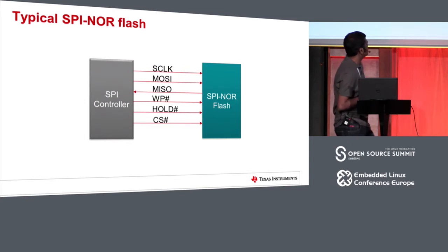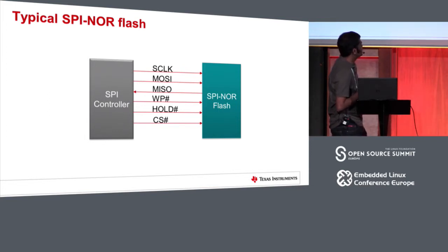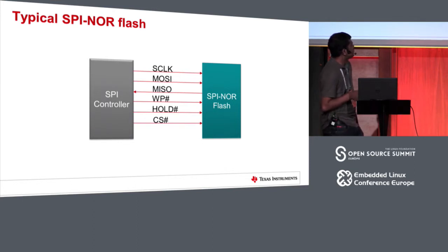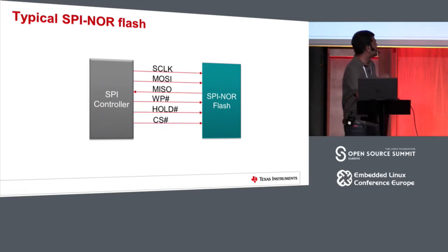This diagram shows a typical SPI NOR flash connected to a SPI controller. The top three signals are common SPI signals — there is a clock running from controller to flash, MOSI line used by the controller to send data to flash, and the other line used by flash to send data back to the master. There's a chip select line to select the appropriate chip. The write protect and hold lines are mostly flash specific. Write protect is used to make NOR flash read-only and not respond to write or erase commands. Hold line is used to pause a transaction without actually de-selecting the NOR flash, so that you could pause and then resume the transaction.